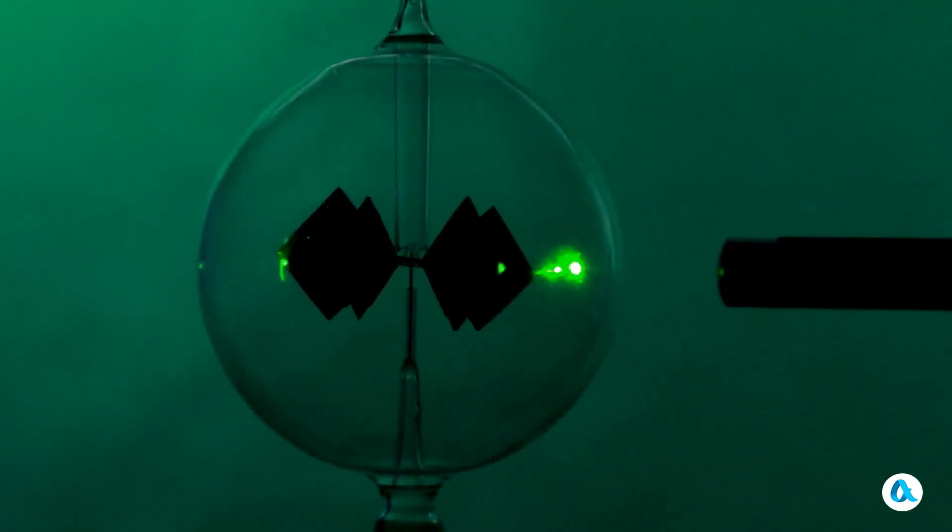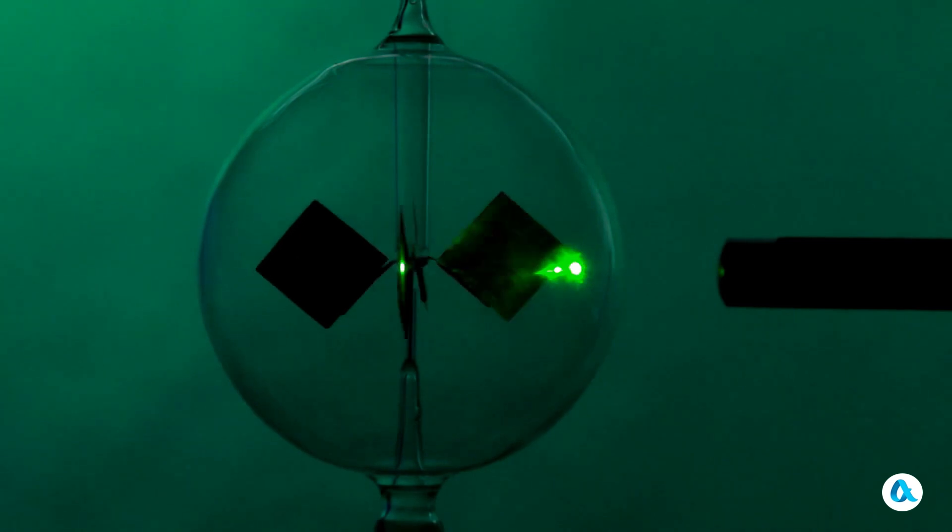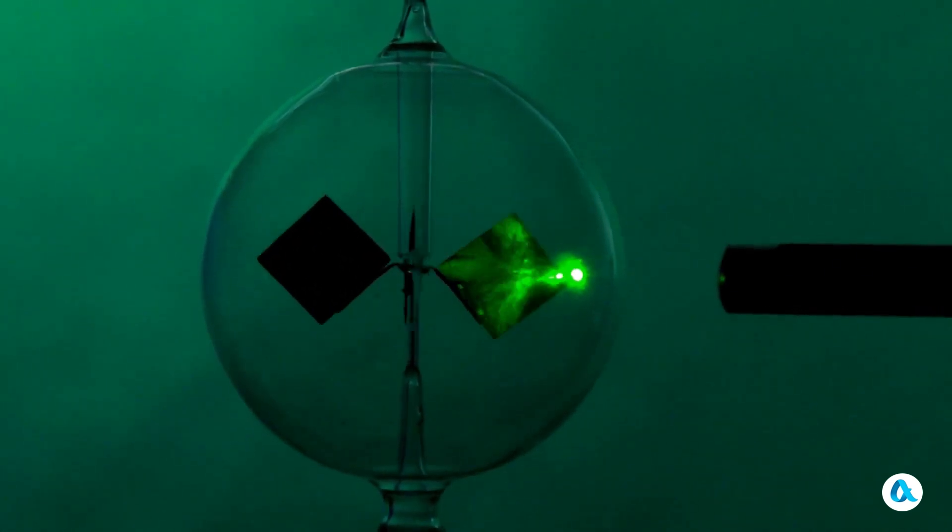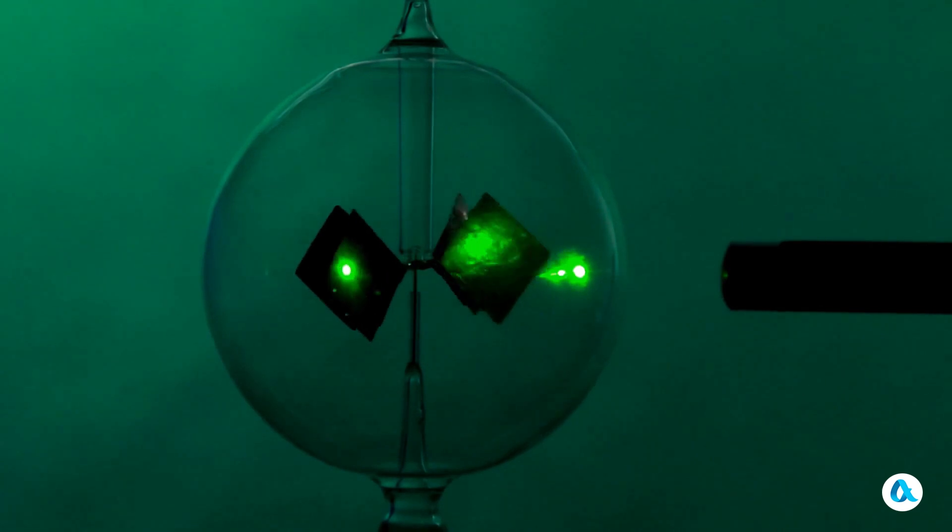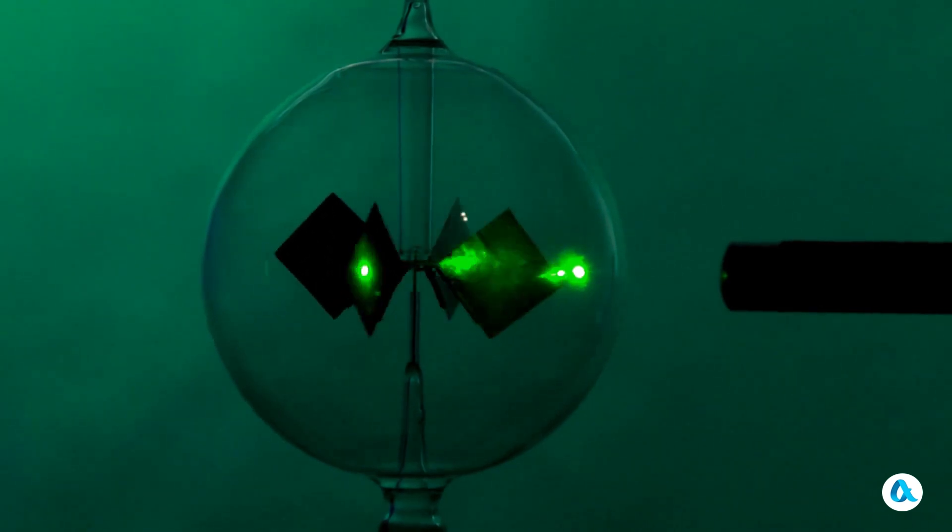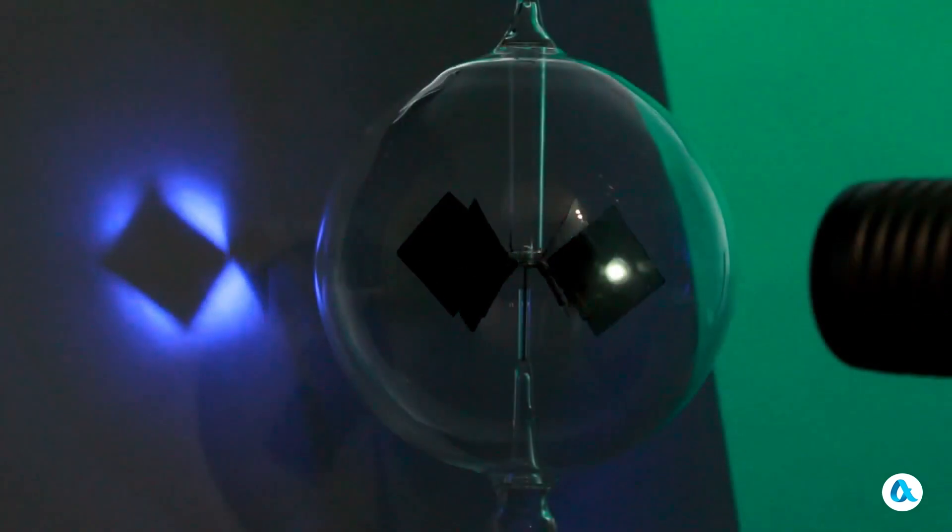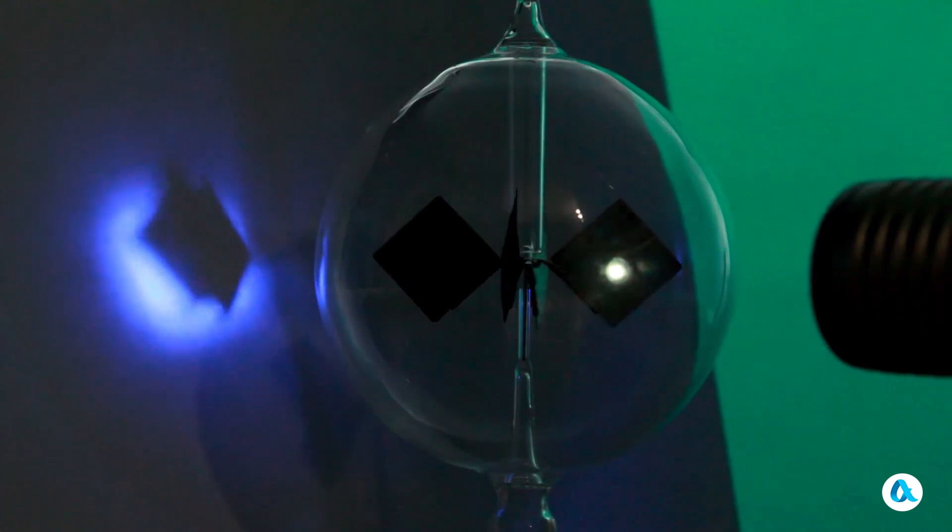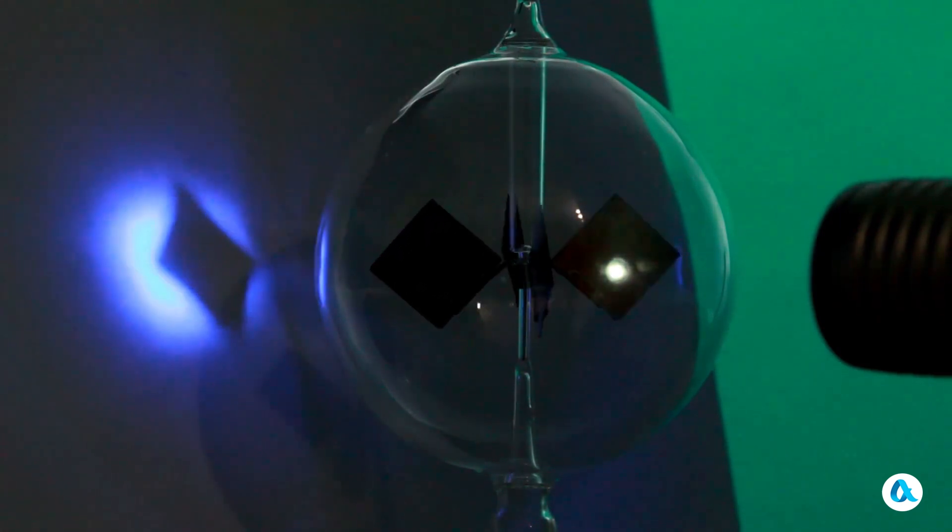The rotation speed of the radiometer's vein can be used to determine the power of the incident radiation. The spot from the laser pointer is bright, but its size is small, and the total power of the radiation is low, so the vein rotates not very fast. Let's use an ultraviolet flashlight instead of a laser. Its radiation is clearly visible due to the fluorescence of the white sheet of paper. And the radiometer's vein rotates even under such slight illumination.